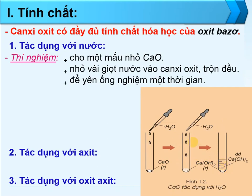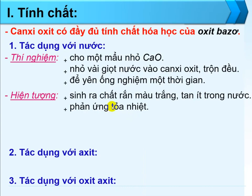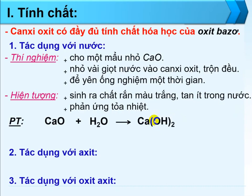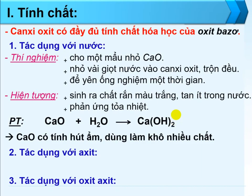Phản ứng tôi vôi là phản ứng tỏa nhiệt. Phương trình: CaO cộng H₂O, sản phẩm tạo thành canxi hidroxit Ca(OH)₂. Canxi hidroxit Ca(OH)₂ là chất tan ít trong nước, phần tan ra gọi là dung dịch bazơ. Canxi oxit có tính hút ẩm, dùng làm khô nhiều chất.